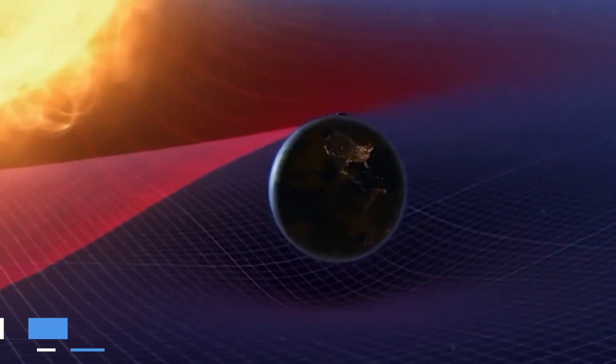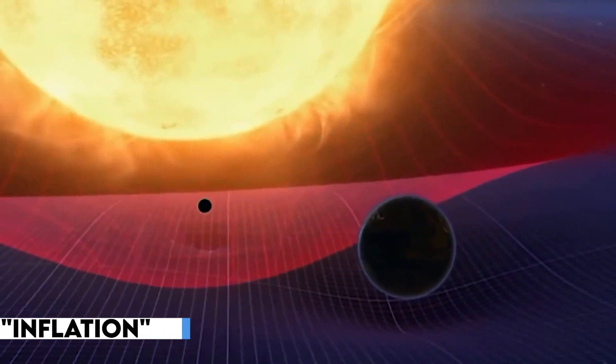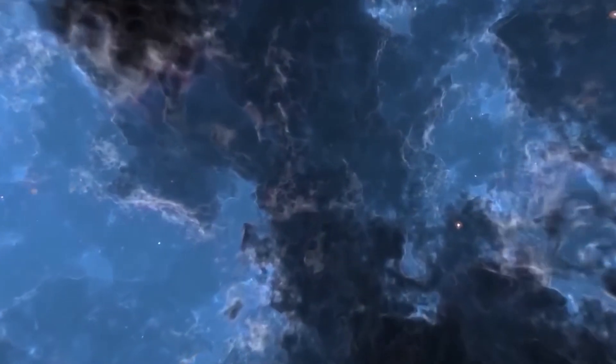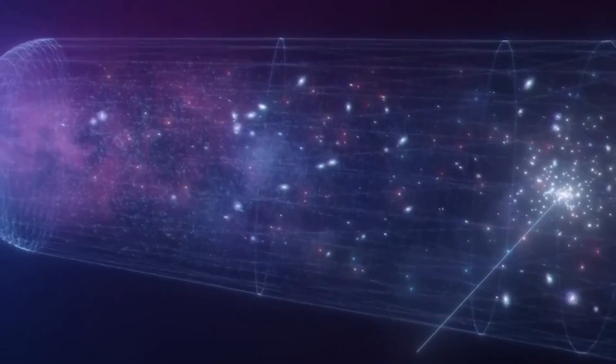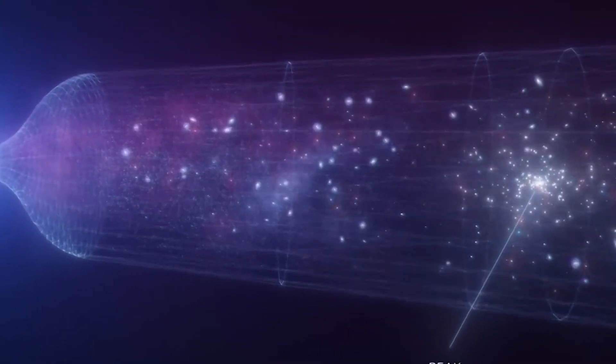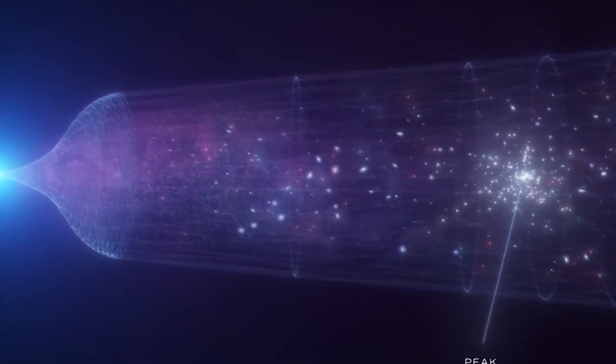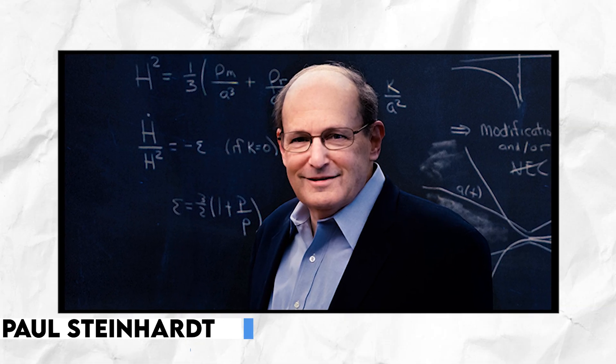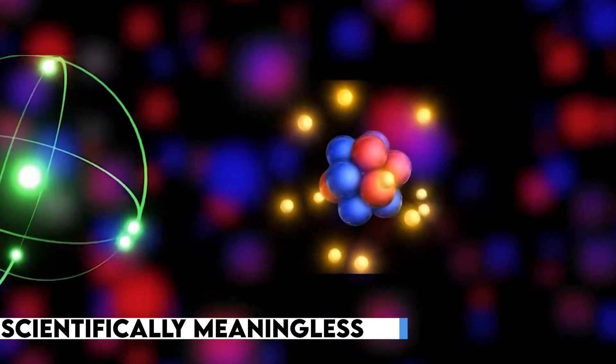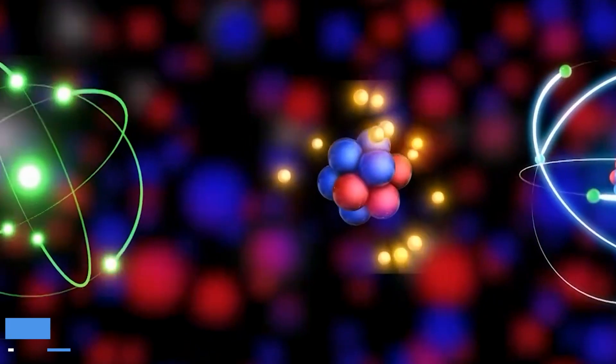This Big Bang Theory hangs on a crucial hypothesis called inflation, which suggests that the universe expanded faster than the speed of light during its early moments. But here is the cosmic twist. Experiments have failed to provide concrete evidence of this cosmic speed demon. One of the founders of the Big Bang Theory, Paul Steinhardt, has thrown a cosmic curveball by criticizing the theory as not just mistaken, but scientifically meaningless. So what's the next move?